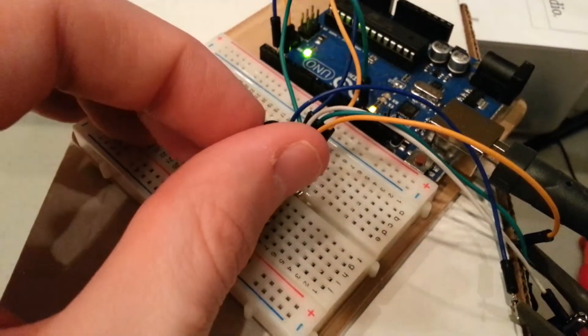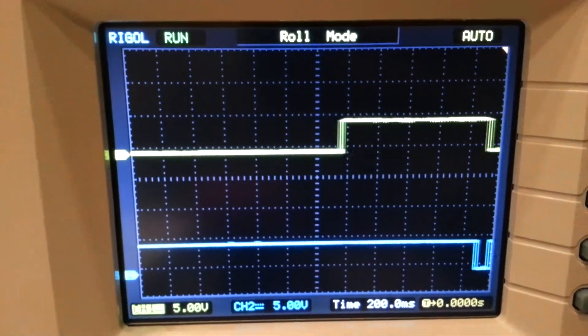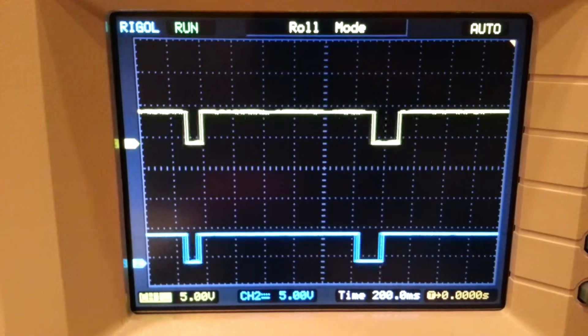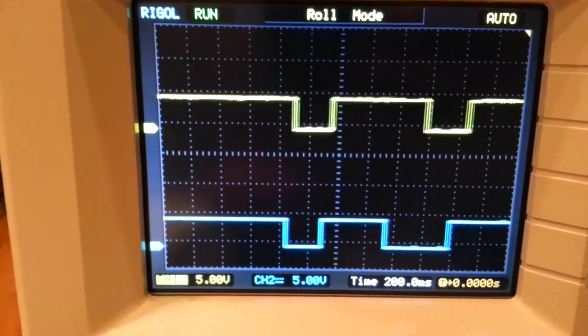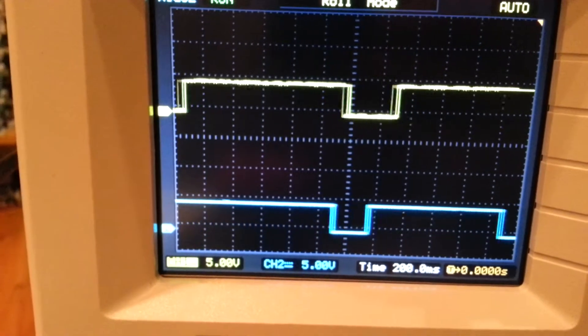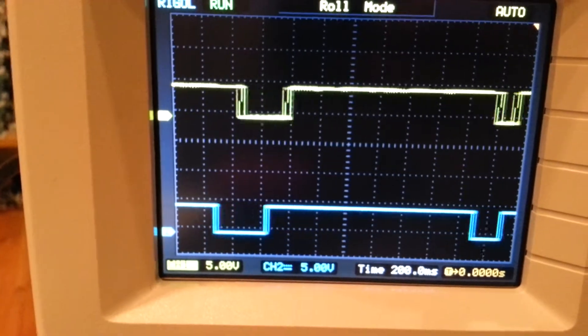When it's turning this way, which we'll say clockwise, we'll see the bottom signal go low first and the top signal will go low after that. So for each click of the rotary encoder,